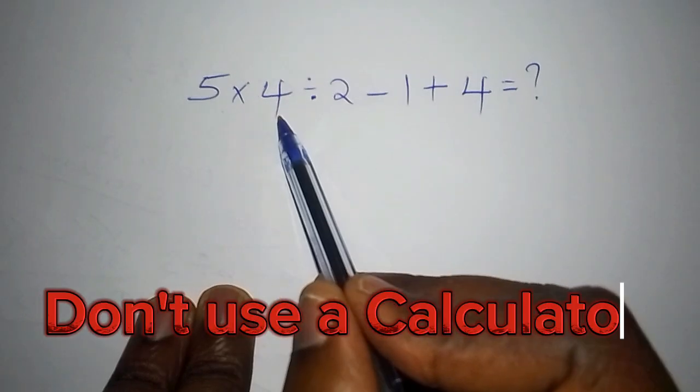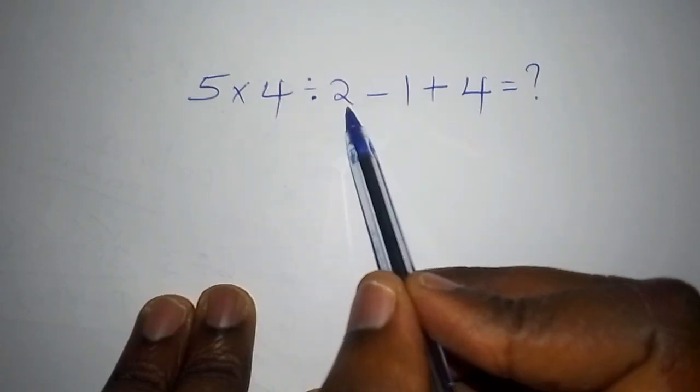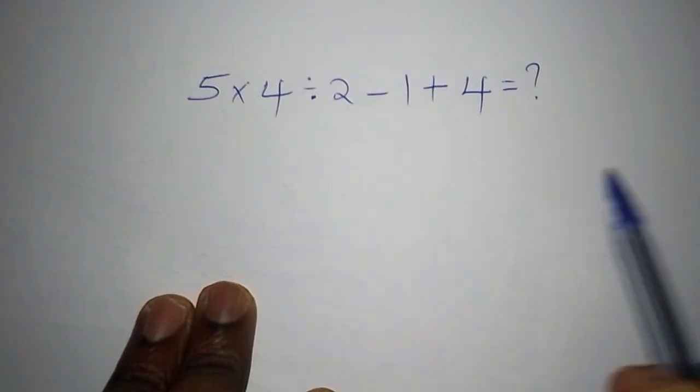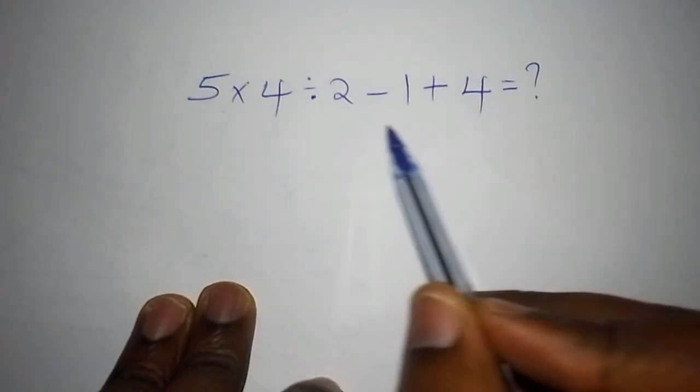I want us to work out 5 multiplied by 4, divide by 2, subtract from 1, add 2 to 4. Now, there are simple mistakes that people make that I don't want you to make.